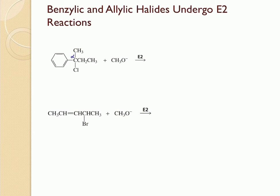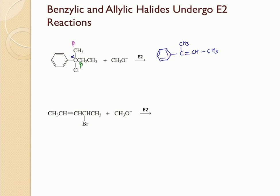Let's take a look at this first reaction. This is our alpha carbon, and these are our beta carbons. We also have one more beta carbon, but this beta carbon doesn't have any hydrogen, so we need to pull the hydrogen from one of the other carbons. To find the stable product, we pull the hydrogen from the carbon which has the least number of hydrogens. As you can see, the newly formed double bond is in conjugation with the already existing double bond in the benzene ring, so this product is more stable.